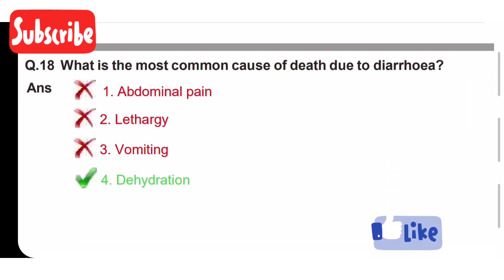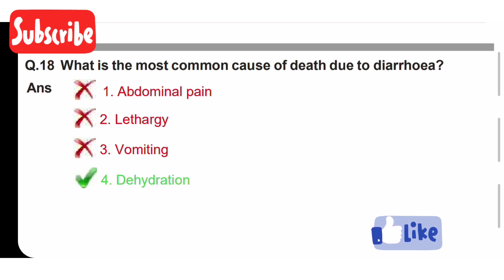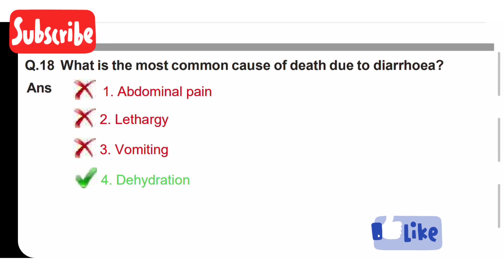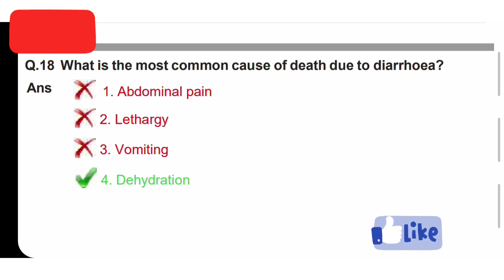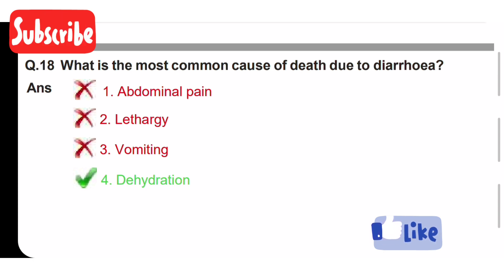What is the most common cause of death due to diarrhea? Option one is abdominal pain, option two is lethargy, option three is vomiting, option four is dehydration. Dehydration is the most common cause of death due to diarrhea.